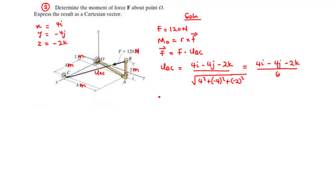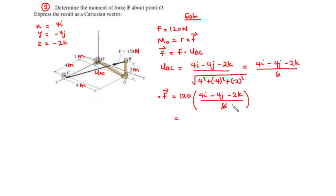Now let's find the force represented as a Cartesian vector. The force vector F equals the magnitude 120 times the unit vector U_BC = (4I − 4J − 2K) / 6. Working this out: 120/6 = 20, so 20 times 4 gives 80I, 20 times negative 4J gives negative 80J, and 20 times negative 2K gives negative 40K. So F = 80I − 80J − 40K.